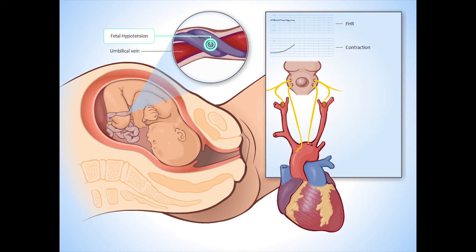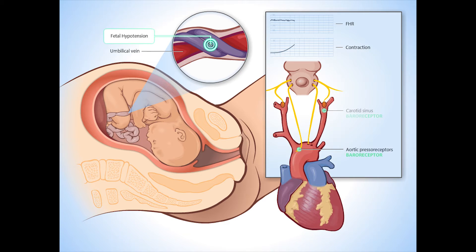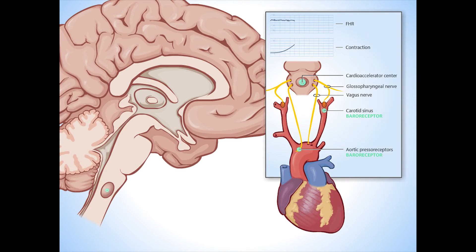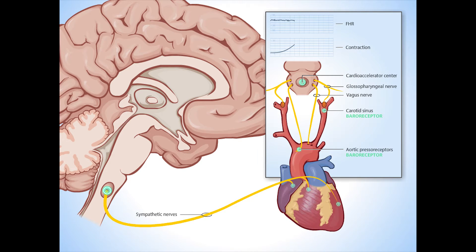Fetal hypotension triggers baroreceptors in the aortic presso-receptors and carotid sinus. These receptors send signals to the cardio-accelerator center via the vagus and glossopharyngeal nerves. Stimulation of sympathetic nerves causes the fetal heart rate to abruptly increase. This is called an initial acceleration.